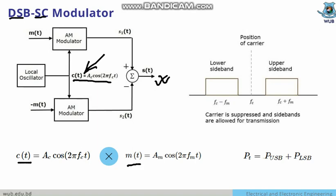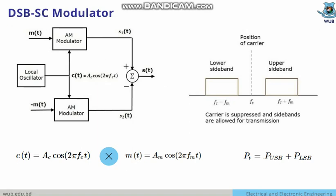Both the carrier and modulating signals are multiplied together to get PT = P_USB + P_LSB, meaning the upper sideband and lower sideband powers are added to get total power. No carrier power is used — that is the main characteristic of DSBSC (double sideband suppressed carrier) modulation, where the carrier is suppressed and only a single carrier is referenced.